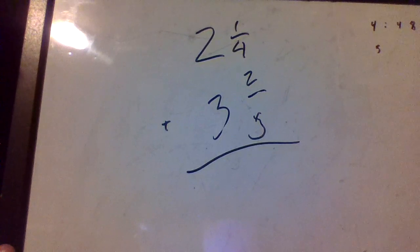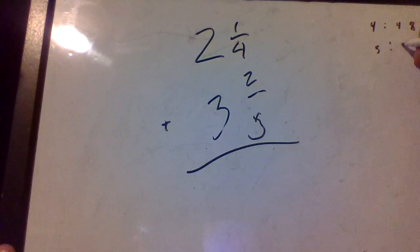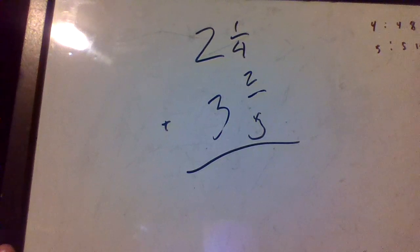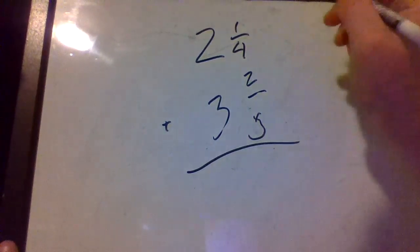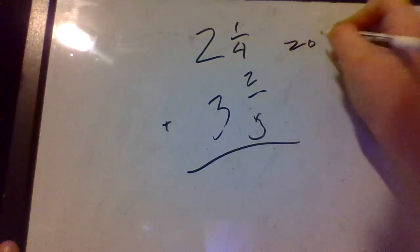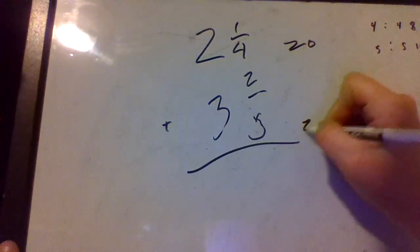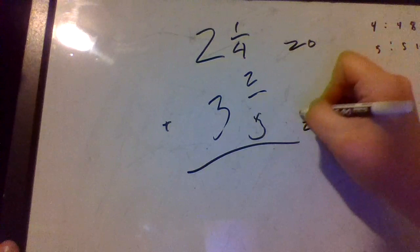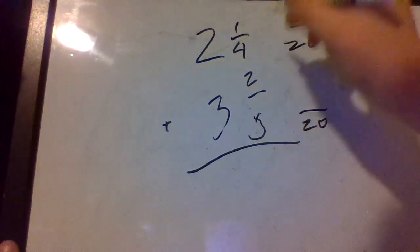All right, so now let's do five. Five times one is five, ten, fifteen, twenty. So there's our common denominator, that's the least common multiple. So our common denominator is twenty.